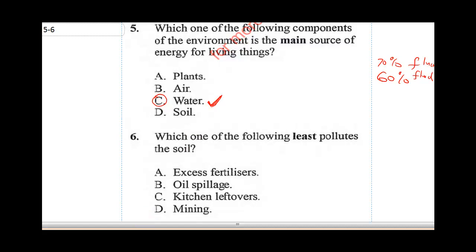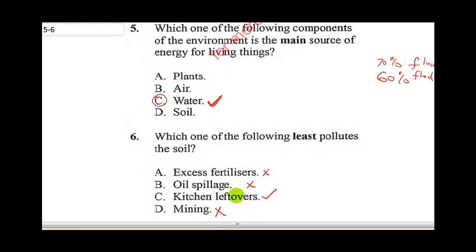Question six says: which one of the following least pollutes the soil? Excess fertilizer pollutes the soil, so that is wrong. Oil spillage pollutes the soil a lot, so that is wrong. Kitchen leftovers are natural manure and do not pollute the soil that much. Mining pollutes the soil. So the correct answer for question six is C — kitchen leftovers.